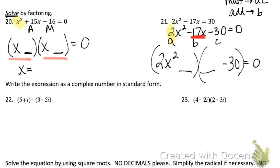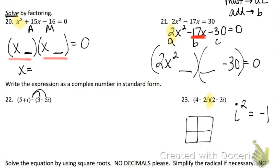Problem 22 asks you to write as a complex number in standard form. Since we're subtracting, make sure you distribute your negative and then combine like terms. For problem 23, we are multiplying — you could either FOIL or set up the box method. Remember, i times i is i², which equals negative 1. In your final answer, you should not have any i² — replace all of them with negative 1 and combine like terms.